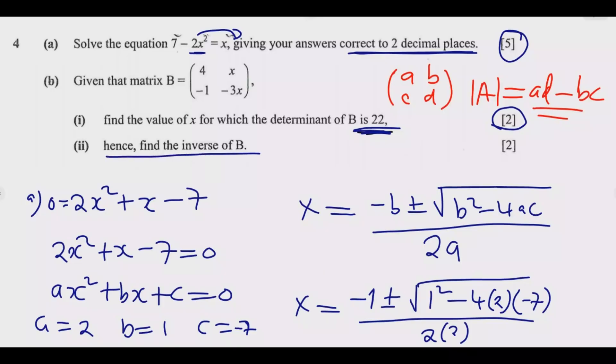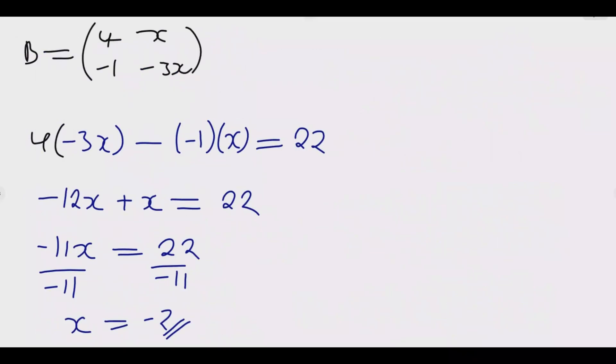Then part ii, finding the inverse. After I find the value of x, if the value of x is incorrect, then you won't get part ii correct. So you have to make sure you get it correct. Now having found the value of x and we know the determinant is 22, we can easily find the inverse of this matrix. The inverse of a matrix, if I'm given a matrix which equals a, b, c, d, the inverse of that matrix equals 1 over the determinant of A.